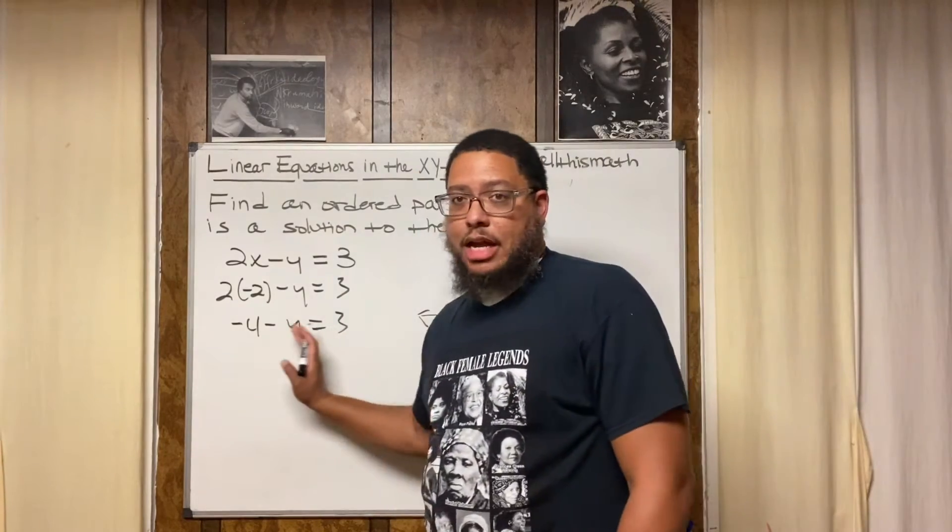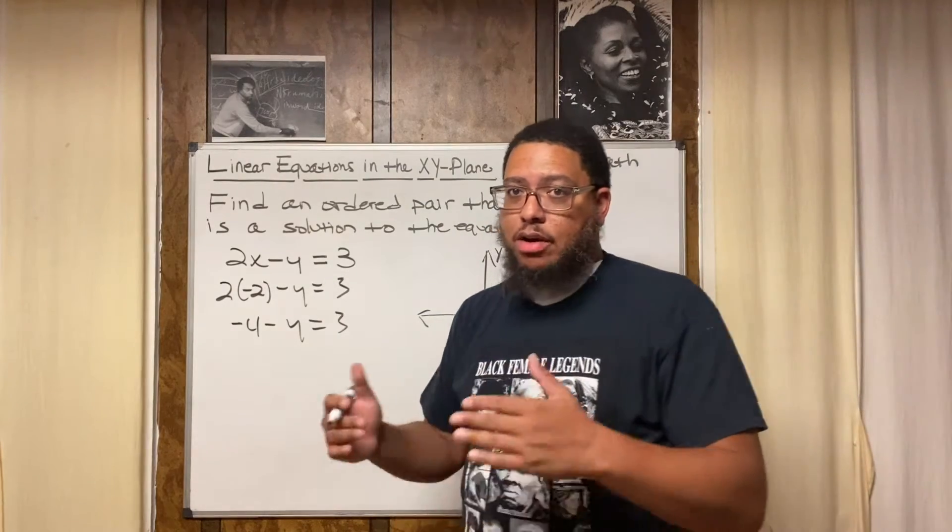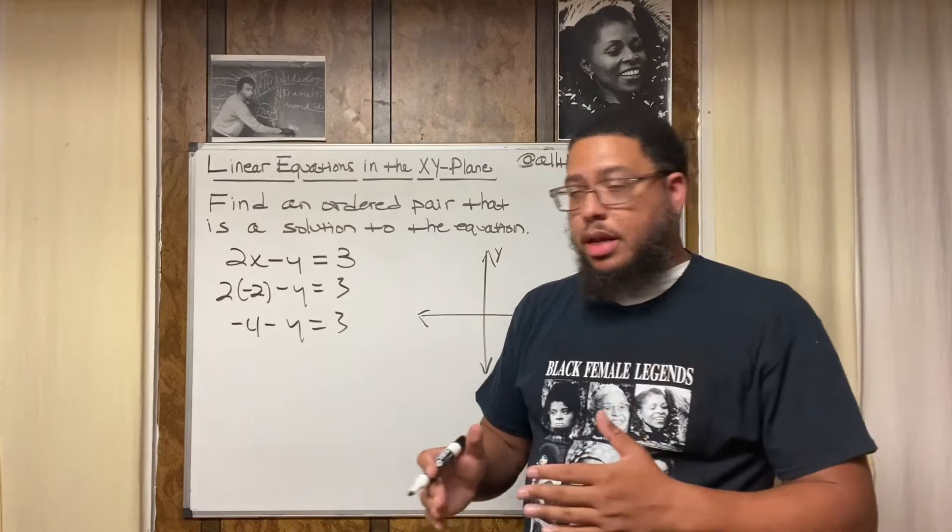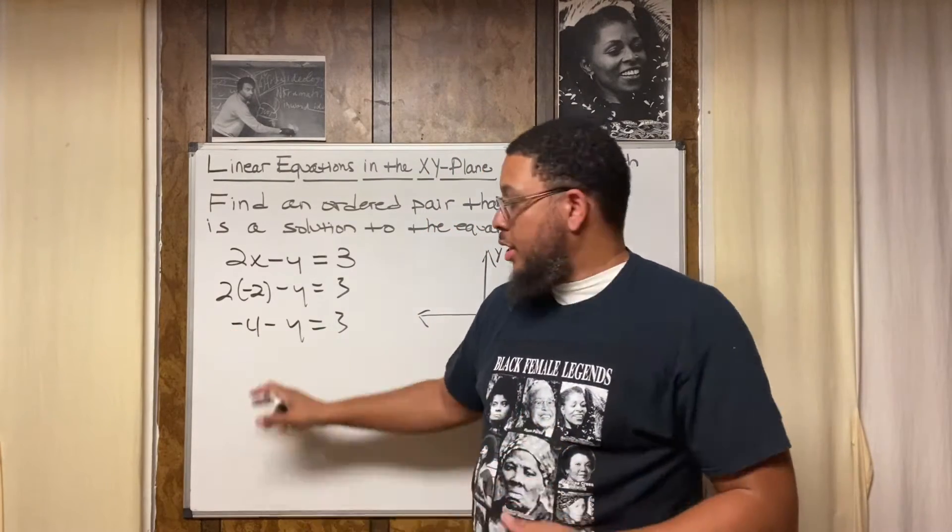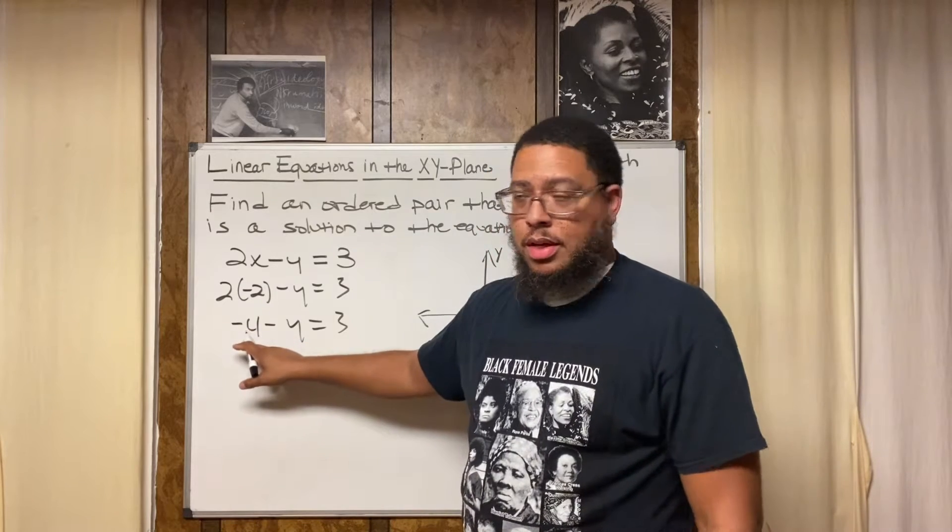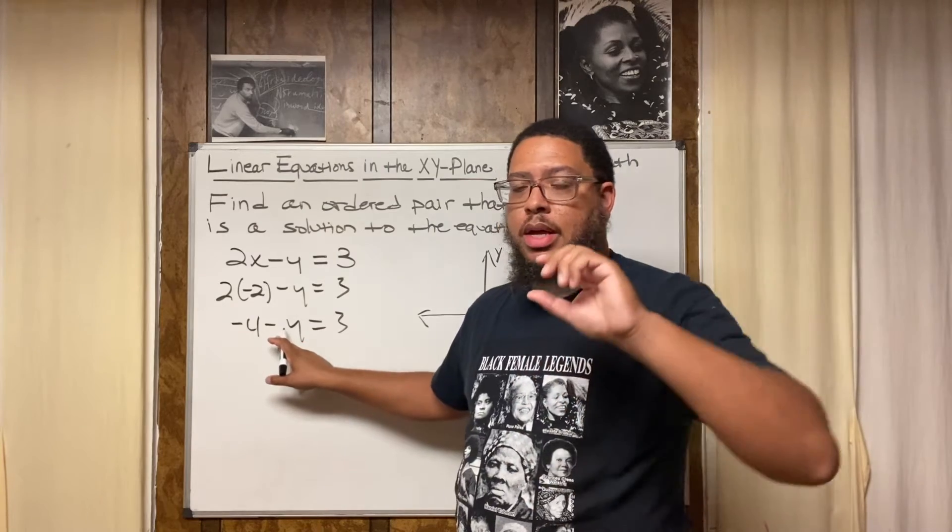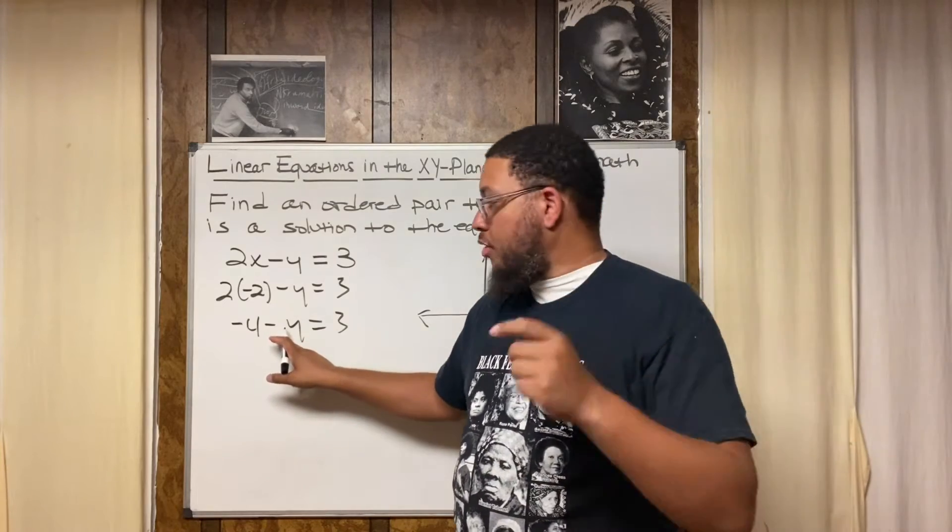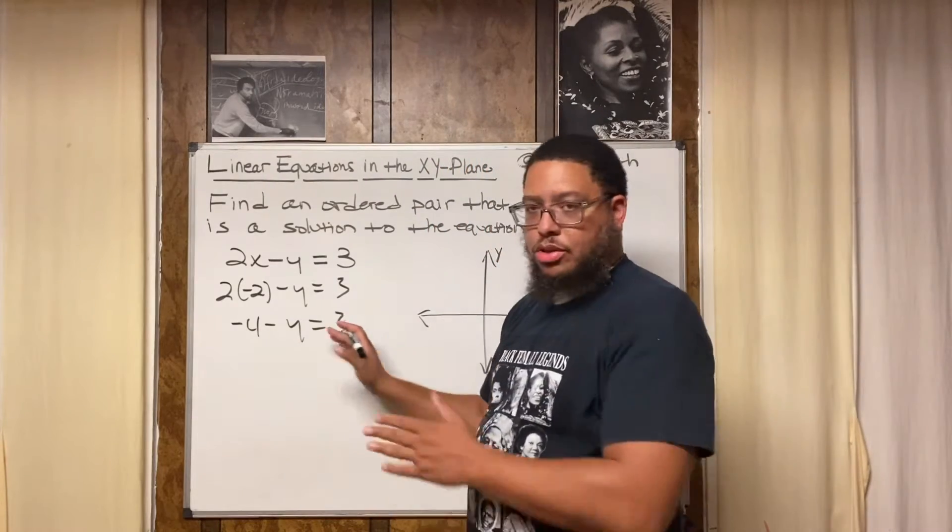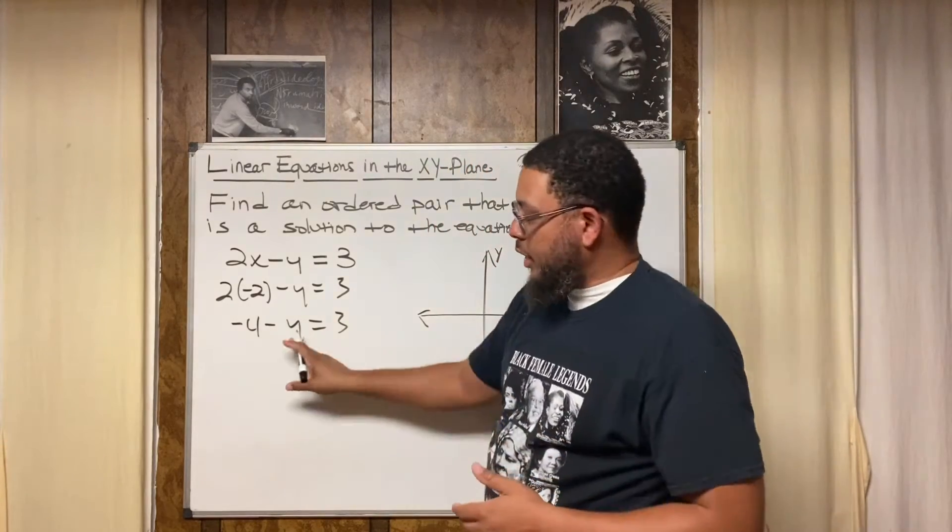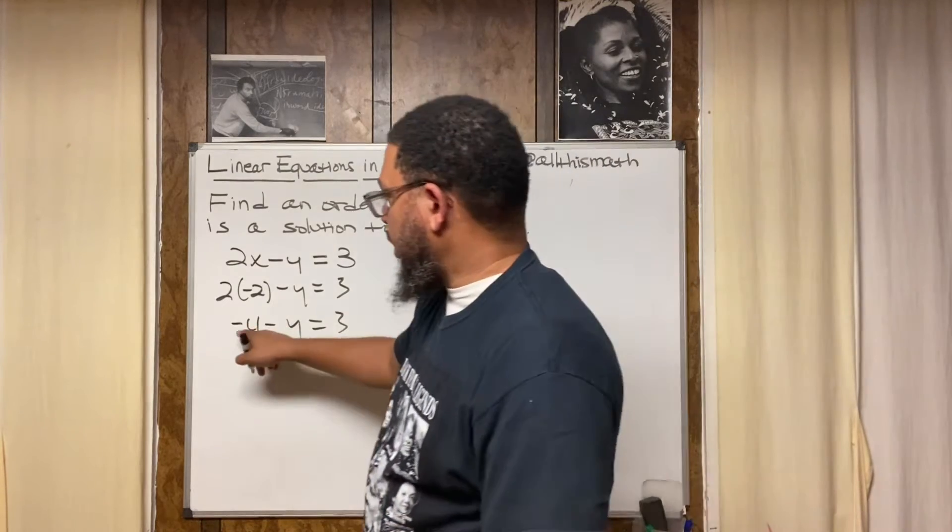Now again, my goal is to get y by itself. When I say by itself, I mean on that side of the equation. The equation has two sides, a left side and a right side, divided by the equal sign. On the left hand side you got negative 4 minus y. I'm trying to get y alone, so I got to get rid of this negative 4 and I also got to get rid of this negative 1 because this minus sign is really a negative 1 that's being multiplied by y.